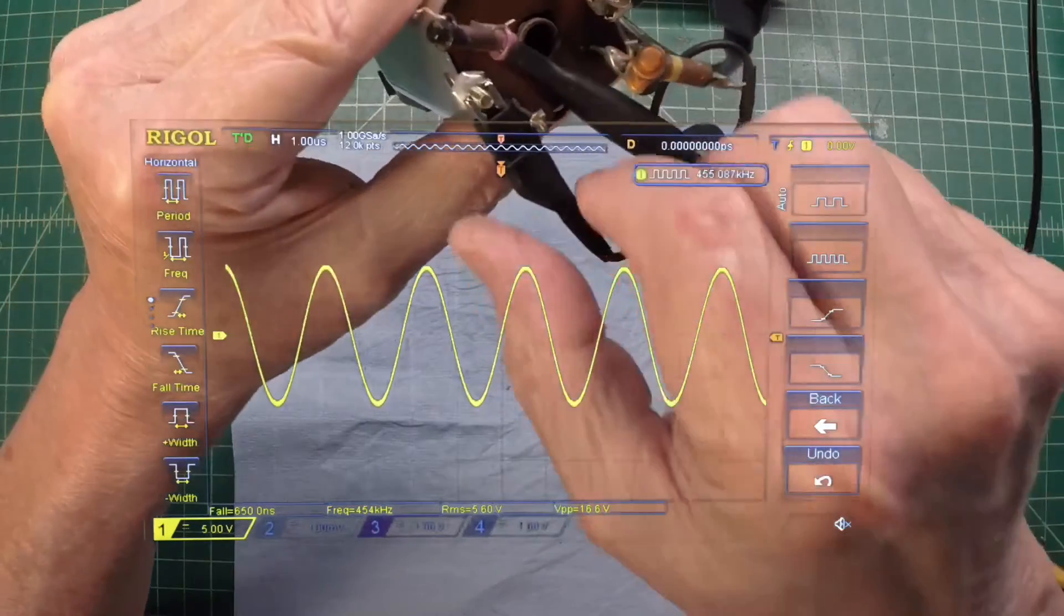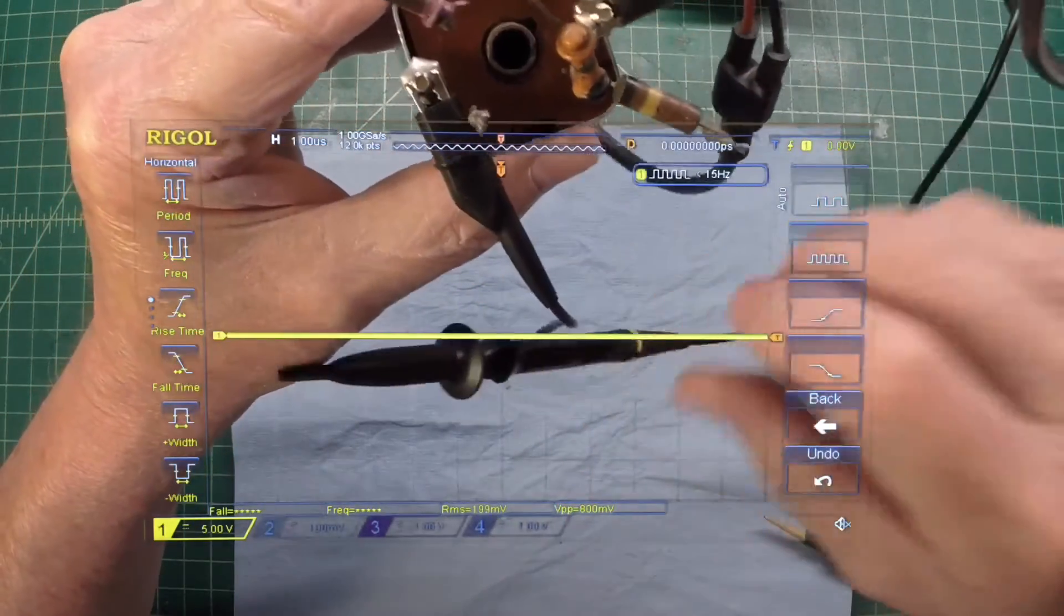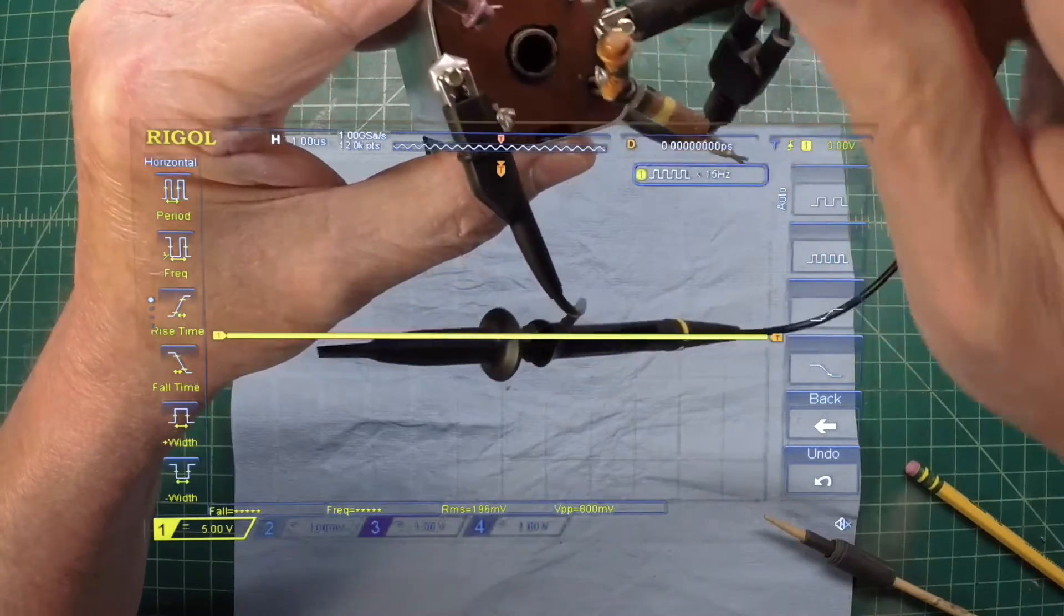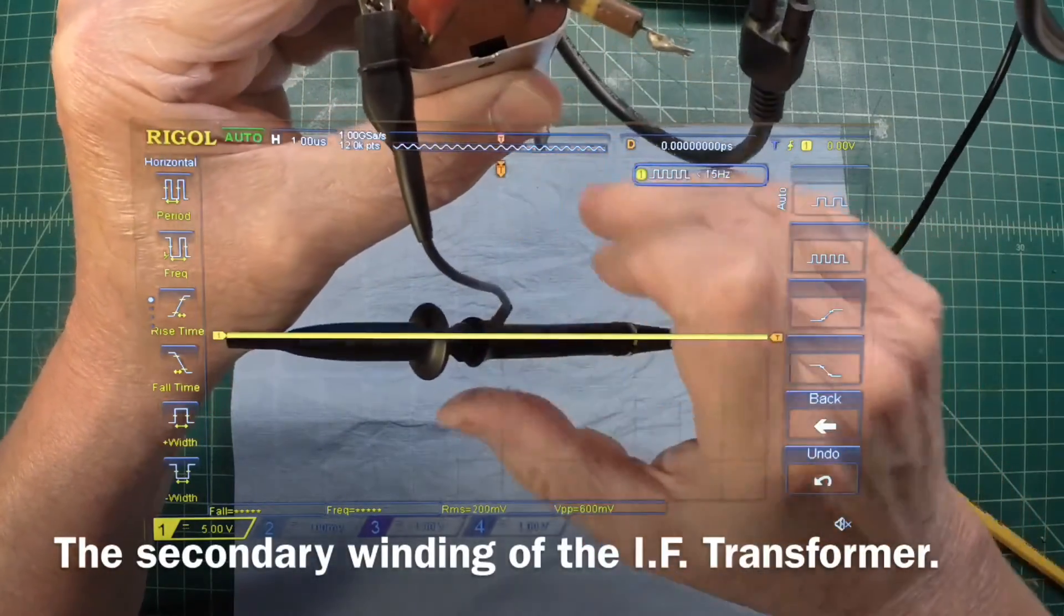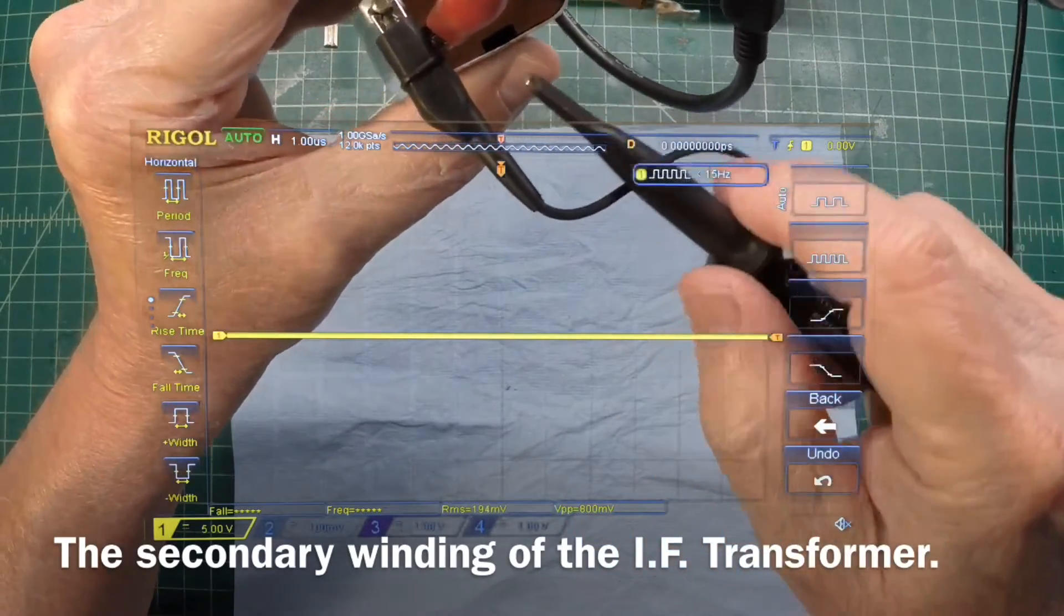All right, let's reverse the leads here. We'll go back over here and we'll make our grid the input of what would have been the grid connection here back to the IF transformer.